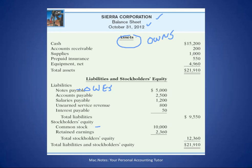We list these assets — and we should summarize them in the middle column, but they don't. Cash balance, $15,200. Accounts receivable, $200. Supplies, that's what the business uses day-to-day. Prepaid insurance, we'll explain what that account means later. And equipment. So my total assets are $21,910.